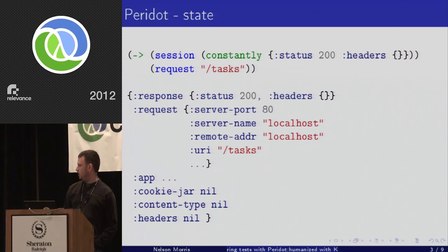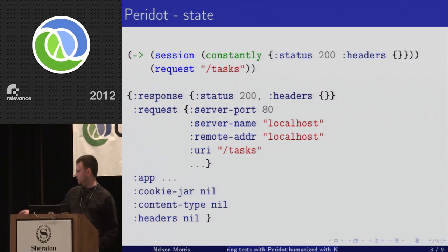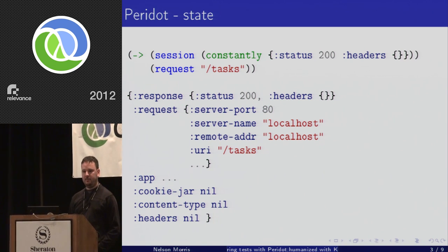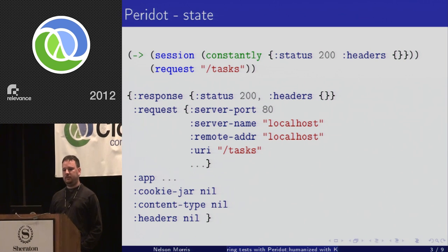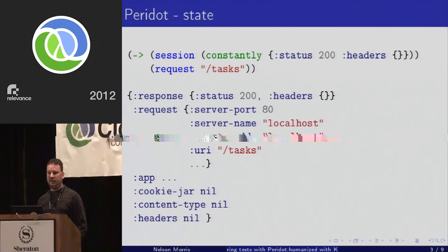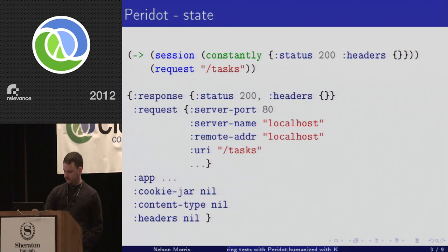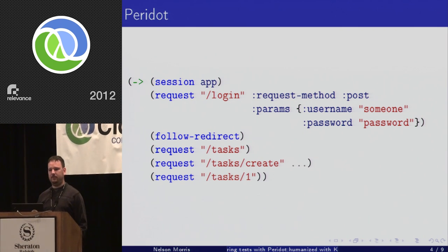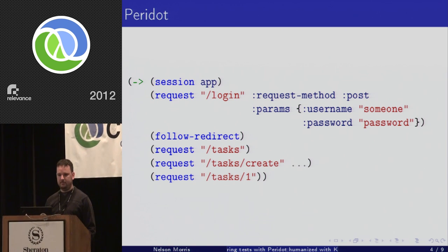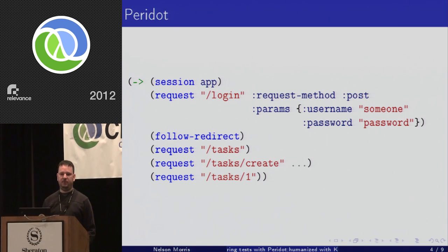There's the app and the cookie jar as already mentioned. There are also a couple of extra things for content type and headers, because it's nice to be able to say that for all future requests in this session I want to use the JSON content type — for example, when testing a JSON API. This works well for hitting API endpoints.